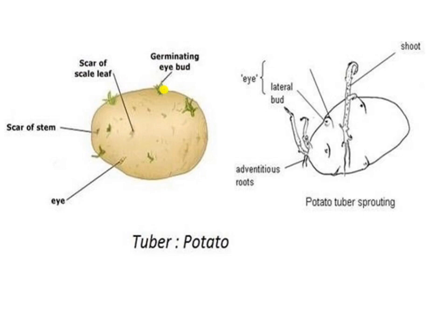After some time, a new shoot develops from the buds. You will observe that a new plant has grown from each cut piece of a potato as the buds grow into new plants. These germinating eye buds, after some time, grow into a new potato plant.